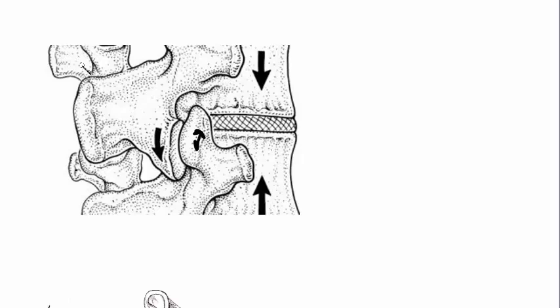But imagine that this one is too tight. What is it going to do? It's going to rotate this vertebra around. So now this joint is subluxated, meaning it's not where it's supposed to be.